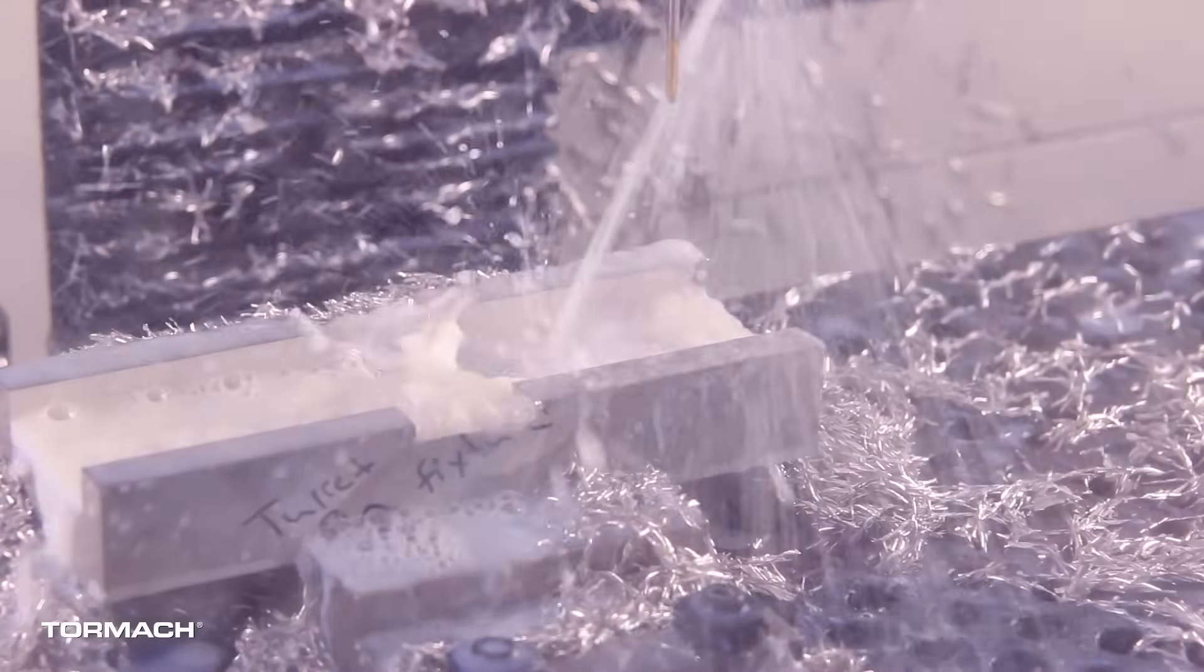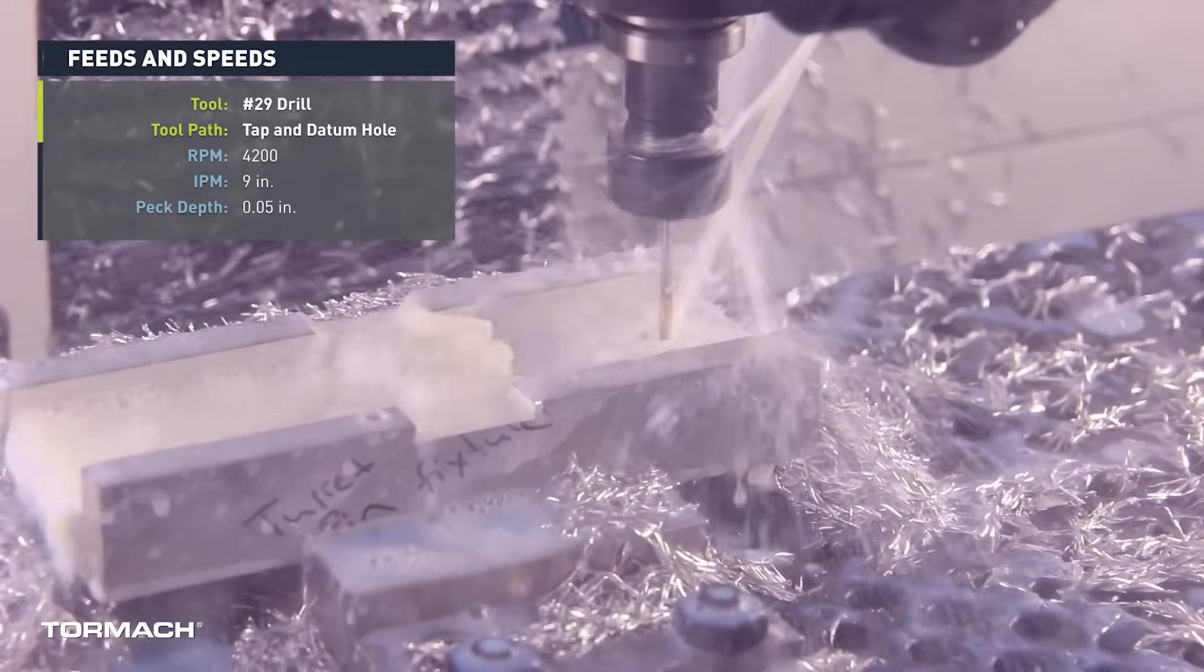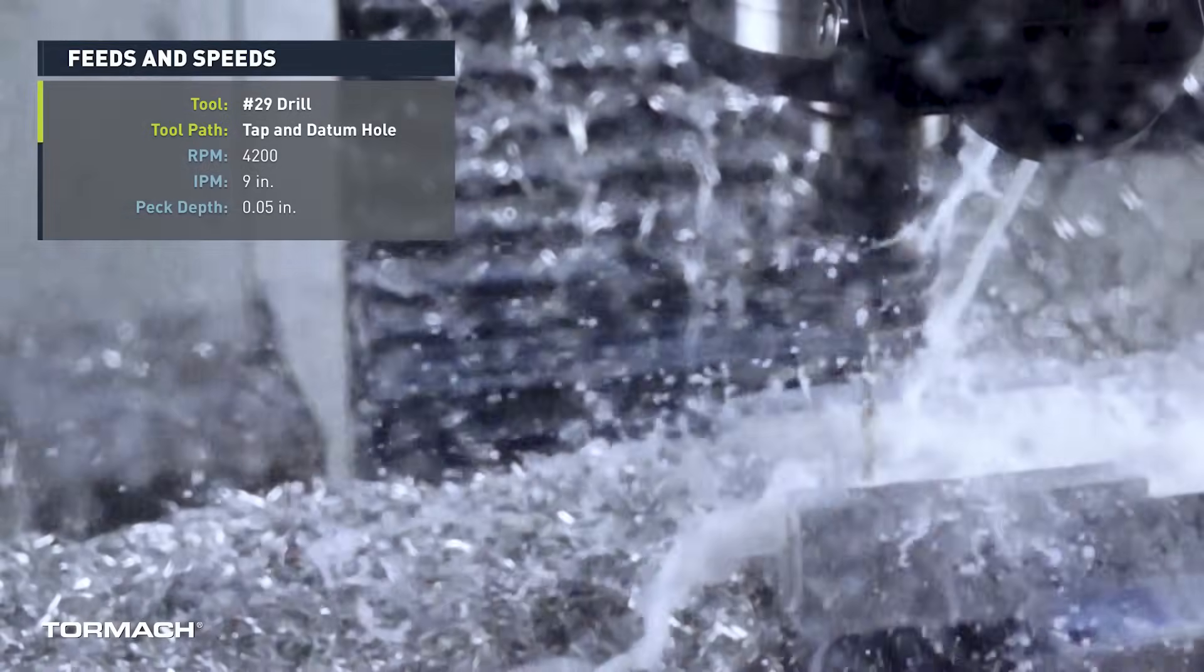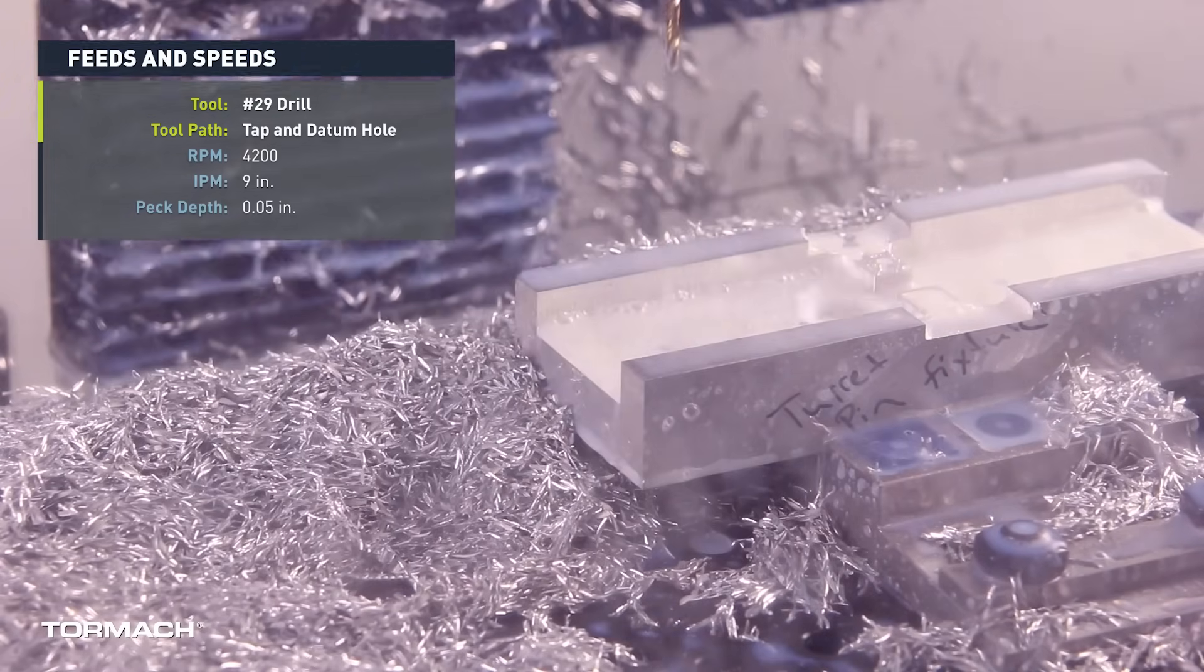After roughing, we came and drilled our tap and datum holes. These are 8-32 tapped holes, so we used a number 29 drill and ran it at 4,200 RPM at 9 inches a minute with a 50 thousandths peck depth.